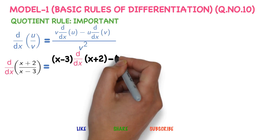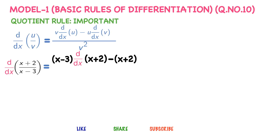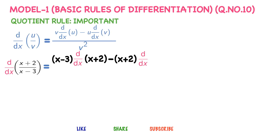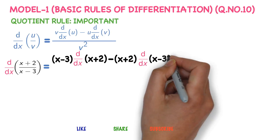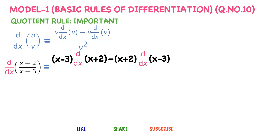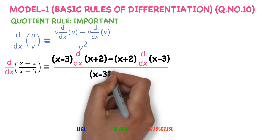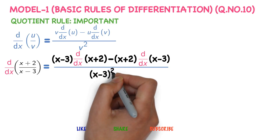Minus u, which is (x plus 2), into the derivative of v, which is (x minus 3), divided by v squared, which is (x minus 3) whole squared.